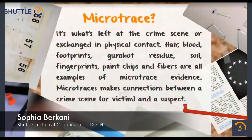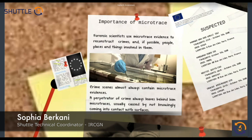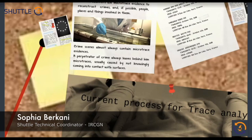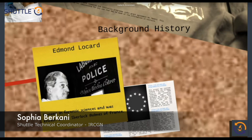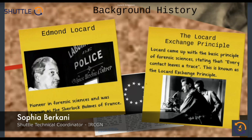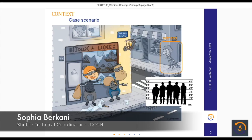Micro trace is basically what's left or exchanged at the crime scene during physical contact. It's usually caused by the perpetrator coming into contact and leaving behind objects. It helps to make a connection between a crime scene and a suspect or a crime scene and another scene. The analysis of micro traces is a pioneer in forensic science — Locard came up with the basic principle stating that every contact leaves traces.